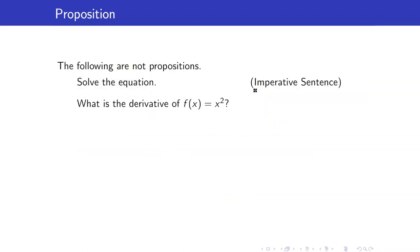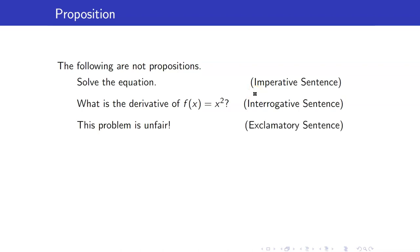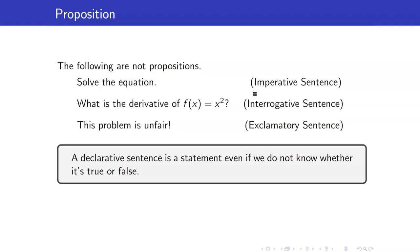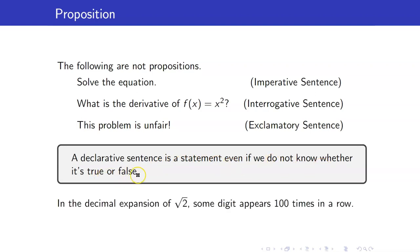'What is the derivative of f of x equals x squared?' is an interrogative sentence, so therefore not a proposition. 'This problem is unfair' is an exclamatory sentence. Take note that a declarative sentence is still a statement or a proposition even if we do not know whether it's true or false. For example, 'in the decimal expansion of square root of two, some digit appears 100 times in a row.'